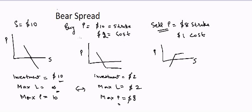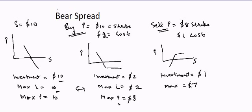When you sell the put at the $8 strike, you make money if the stock price goes up and lose money if it goes down. You are selling the put here, so you receive $1. Your maximum loss will be equal to $7, because the stock can go to zero and you have to pay all $8 but you received $1, so you will have lost $7. Your maximum profit is $1, which is just the premium you received for selling the put.